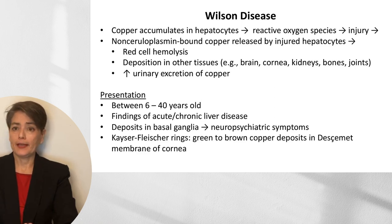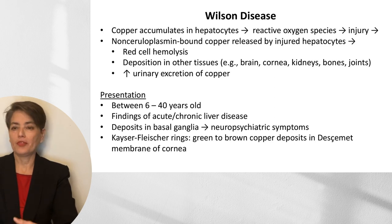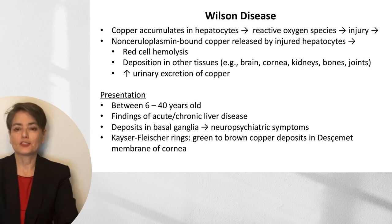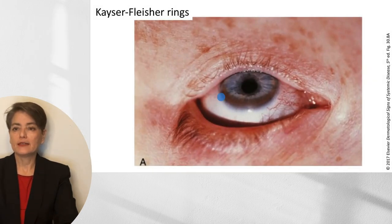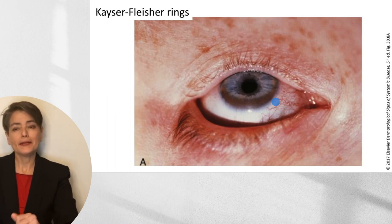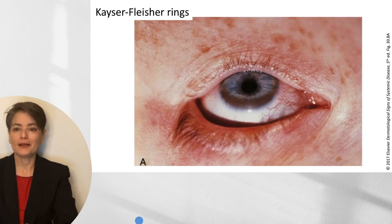Patients typically present between ages 6 and 40 with symptoms of acute or chronic liver disease — elevated transaminases, encephalopathy, coagulopathy. Deposits in the basal ganglia lead to neuropsychiatric symptoms. Deposits in Descemet's membrane of the cornea produce Kayser-Fleischer rings — a brownish deposition visible in the cornea, frequently seen on shelf and board exams.